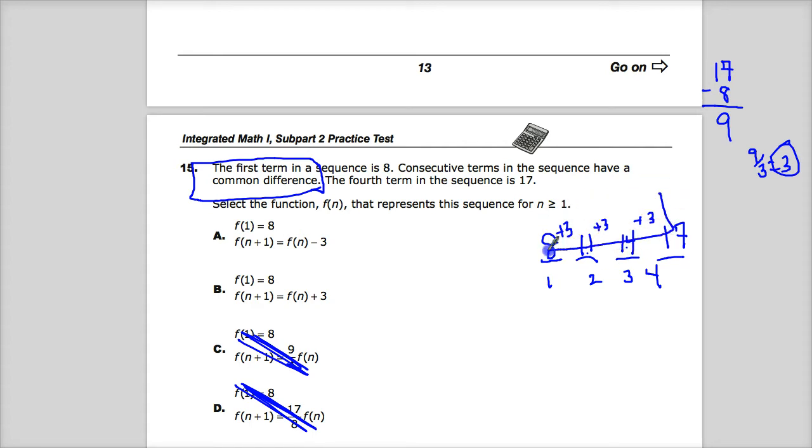You'll notice that I've highlighted this. Plus 3, plus 3, plus 3. If the first term in the sequence is 8, and the fourth term is 17, you can't be going down. It has to be going up. So the idea that you would take this term and subtract 3 doesn't really make any sense. The only way that could possibly be true is if you're defining your statement by going the opposite way. And that's not really how we do it.